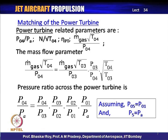You also have the power turbine speed line N2/sqrt(T04), where N2 is different from the gas generator N. The power turbine efficiency must be assigned or estimated by the turbine designer. The normalized mass flow through the power turbine is m_dot_gas * sqrt(T04)/P04, where T04 and P04 are the temperature and pressure at entry to the power turbine. Using the mass flow parameter of the main turbine with the pressure ratio P03/P04 and temperature ratio T04/T03, we can derive the power turbine mass flow parameter.